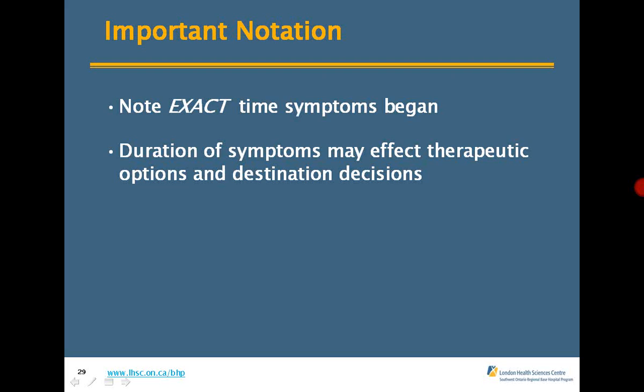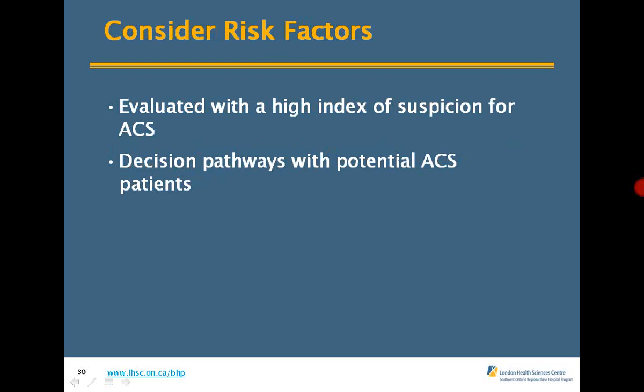ASA is the most important intervention we have. The destination decision also matters — if you think the patient should go to a STEMI center, call your BHP, give them the picture, and proceed. Risk factors are huge — they're evaluated with a high index of suspicion for ACS and inform the decision pathway. Even if just an ASA, giving it to a patient with atypical or equivalent presentation and then getting on the phone with a doc is absolutely the right move. Family history is also a major risk factor.